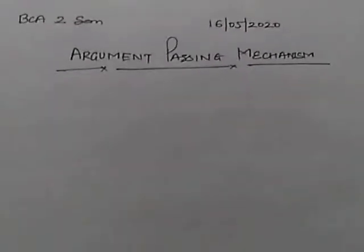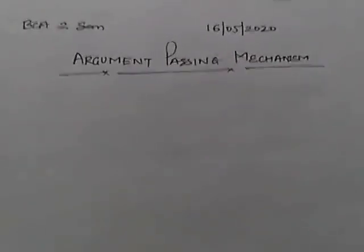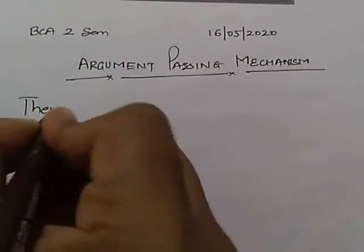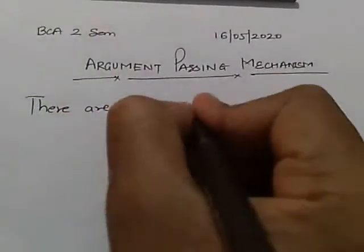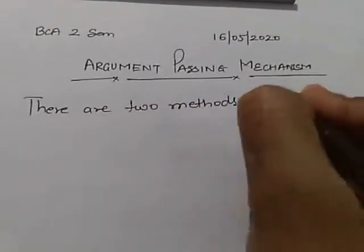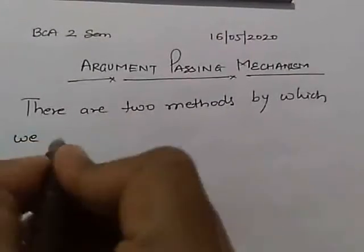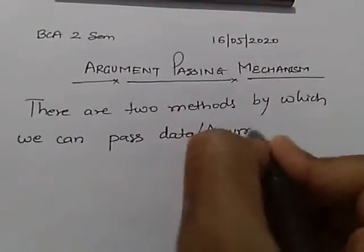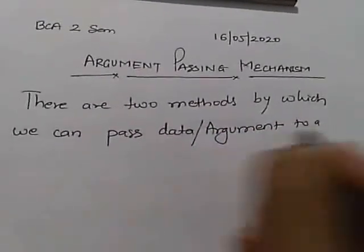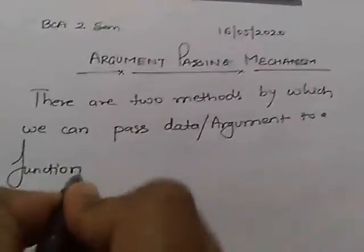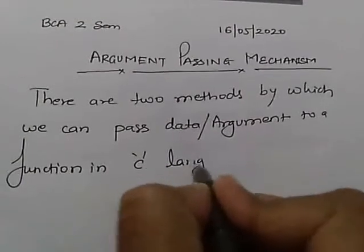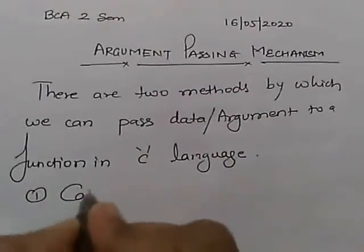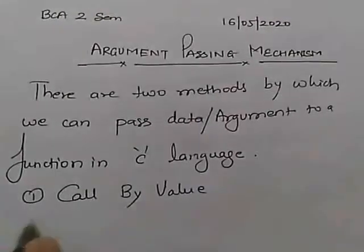Students, hope you will be fine. Today we will discuss argument passing mechanisms in C language. Now there are two methods by which we can pass data or arguments to a function in C language. These methods are known as call by value and call by reference.